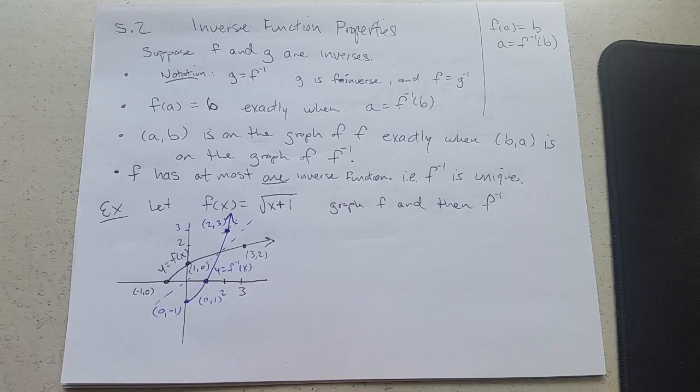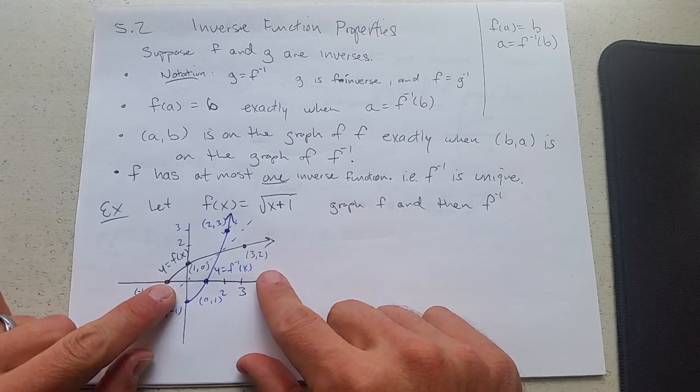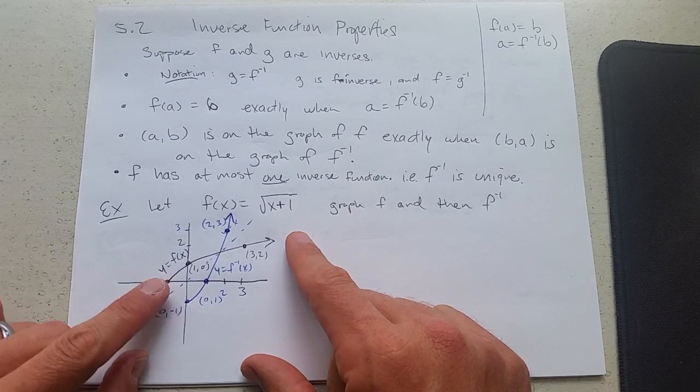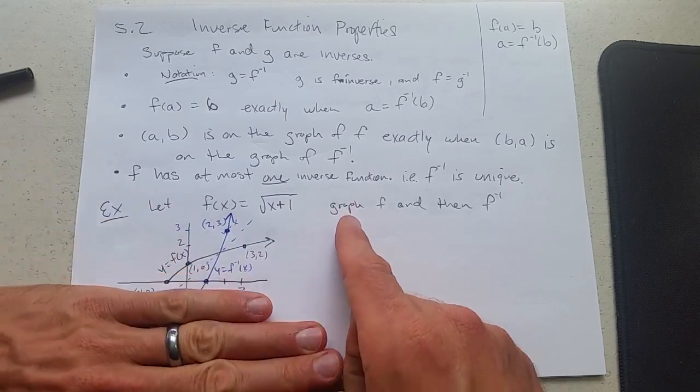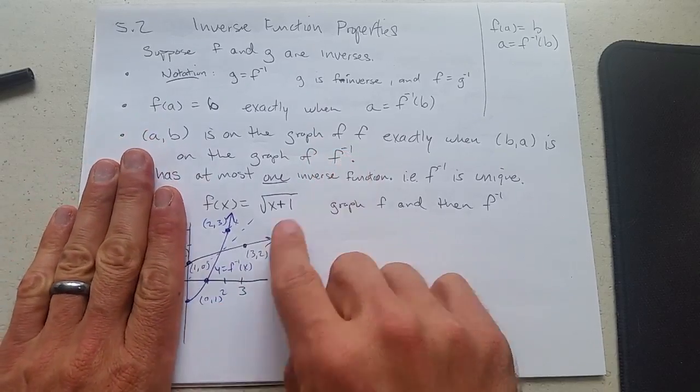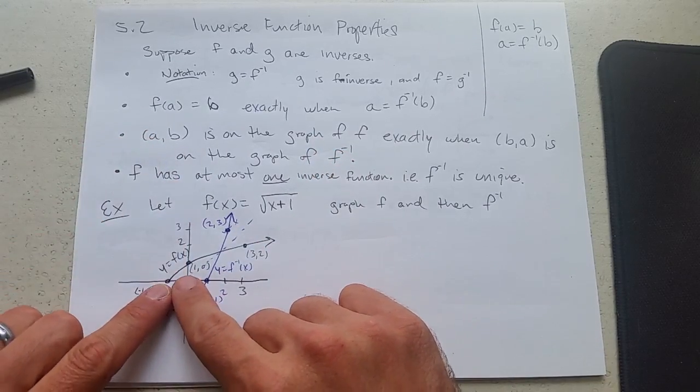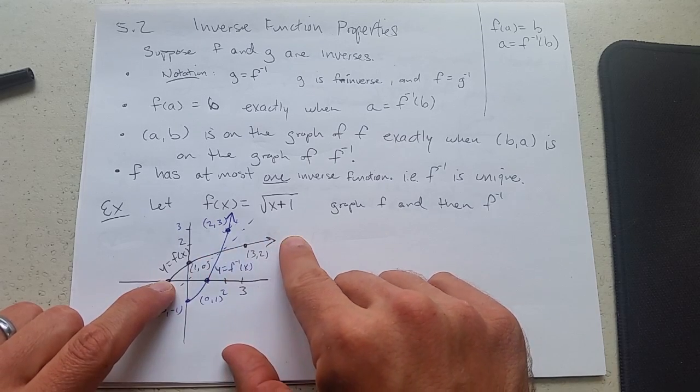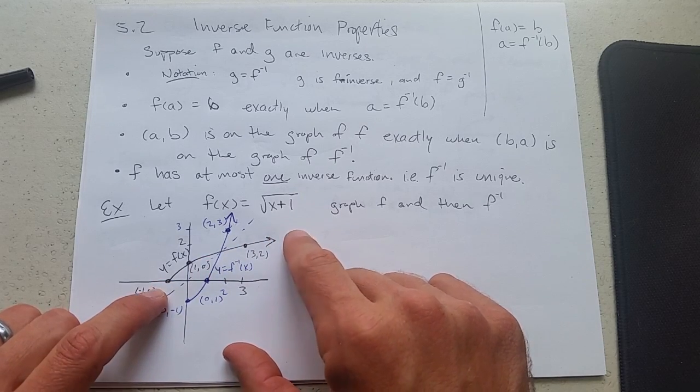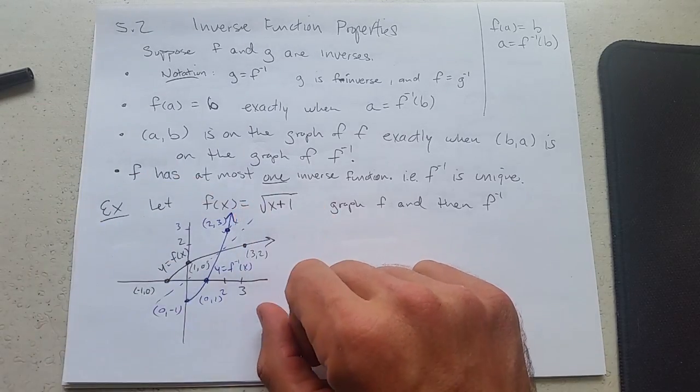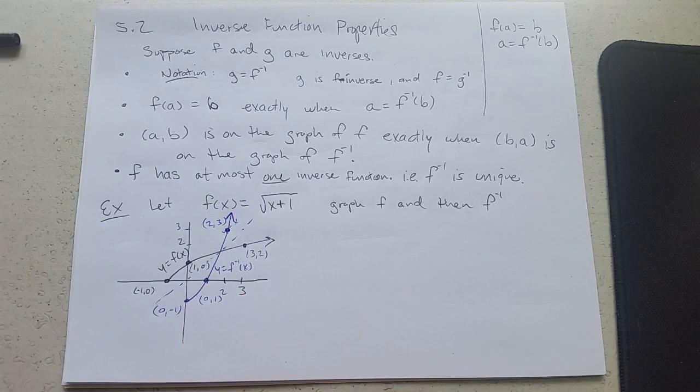You could look and see the domain and the range. The range is 0 to infinity, which is the domain of the inverse. The domain of the original function f is negative 1 to infinity, and the range of f inverse is negative 1 to infinity. So this is how to invert a graph.